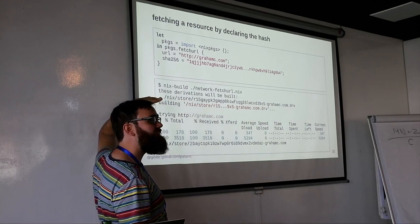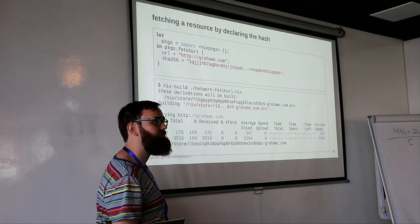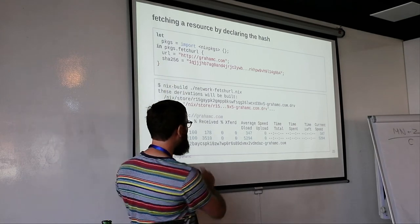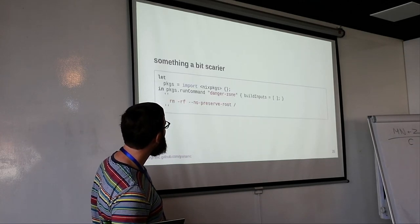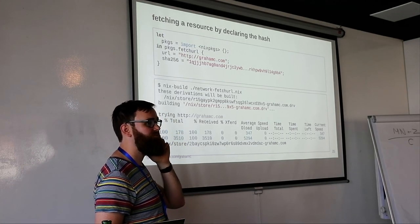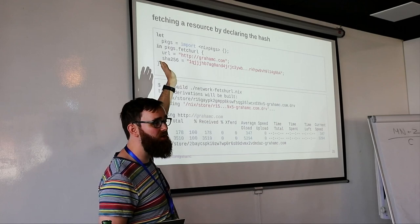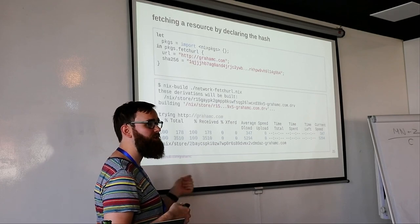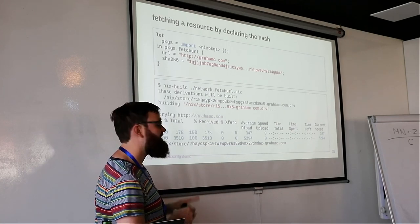Whatever was used for fetchURL is encoded in its derivation. There are an infinite number of derivations that can produce this output — as long as the hash is the same, it will always produce that single output. Q: You mentioned using mirrors — how would you define multiple sources? You can pass in a list of URLs and Nix will try each one. Nix also has a built-in list of mirrors for things in nixpkgs, looking up a mirror by hash. So there's some resilience built in.